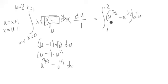And we can take an anti-derivative, u to the 5 halves, and we have 2 fifths minus 2 thirds u to the 3 halves. And then we're just evaluating from 1 to 2.